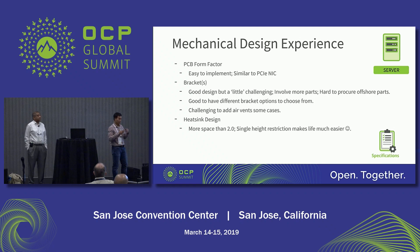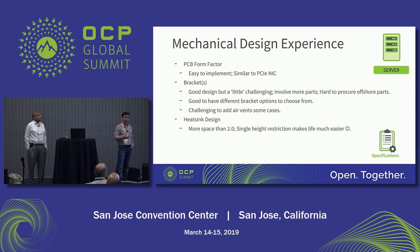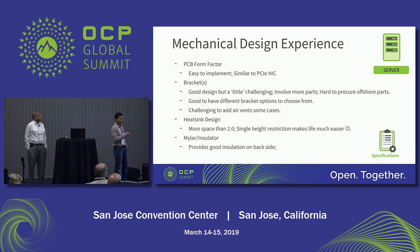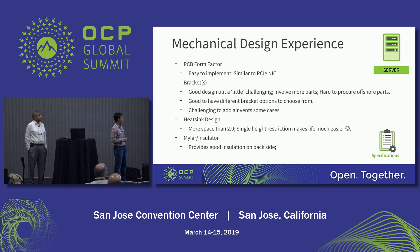In NIC 3.0 there's only a single height restriction of 11 millimeters on the top side, versus NIC 2.0 where you had three or four different height restriction zones — easy to forget sometimes. The mylar in the back is a very nice addition: just a single mylar that protects the backside from shorting to the chassis, for example. It's a really good design.